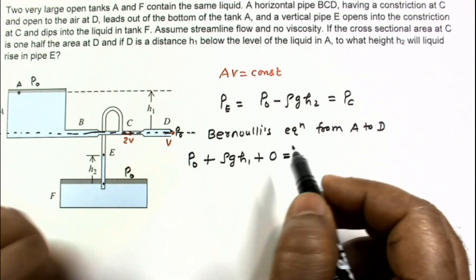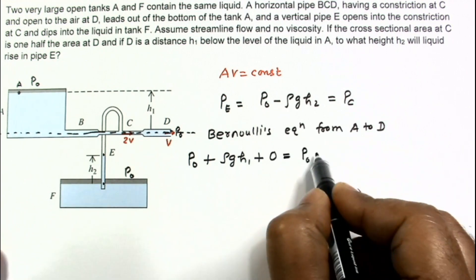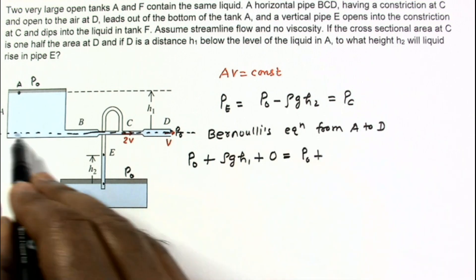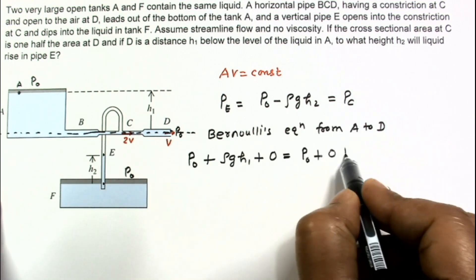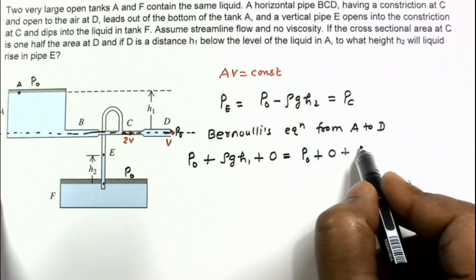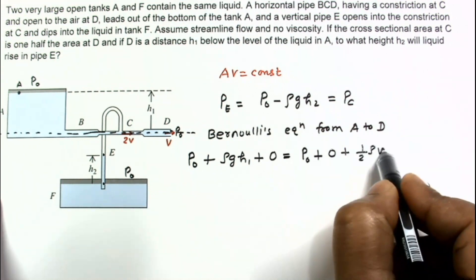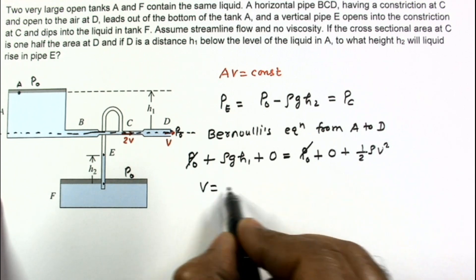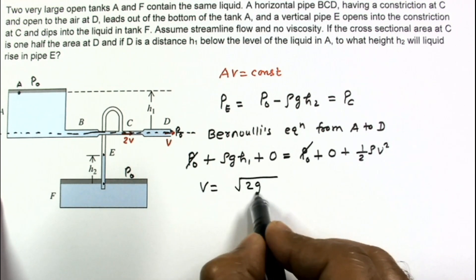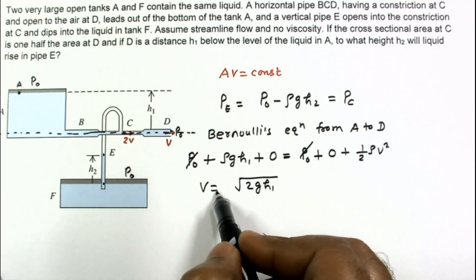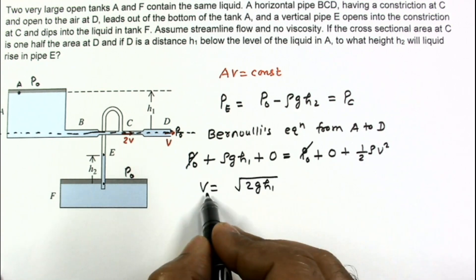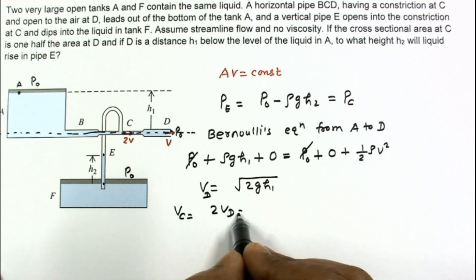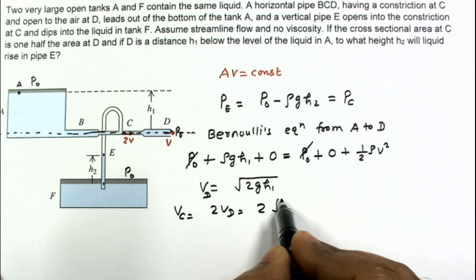Cancelling P₀ from both sides: ρg·h₁ = ½ρv², so v = √(2gh₁). This is the velocity at D. Since the velocity at C is twice the velocity at D, velocity at C = 2√(2gh₁).